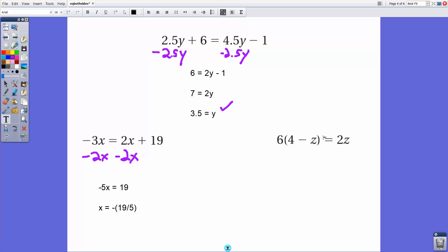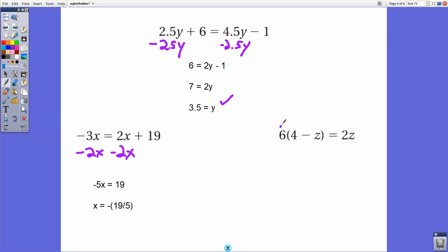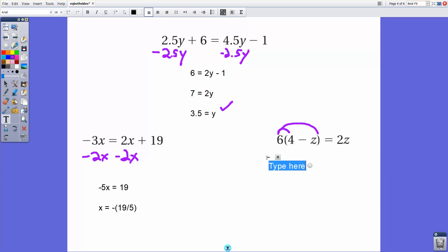With this one here, we have a z outside here. We have a z inside of grouping symbols. So in this case, our first good step here is to distribute. So we distribute here, 6 times 4 and 6 times negative z. That's going to be 24 minus 6z equals 2z.